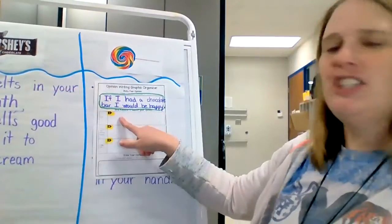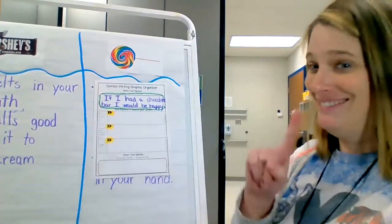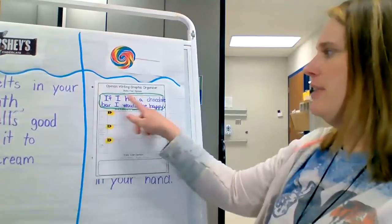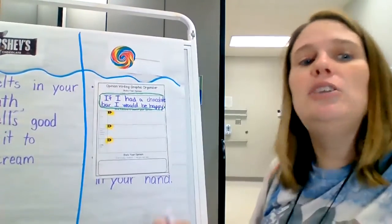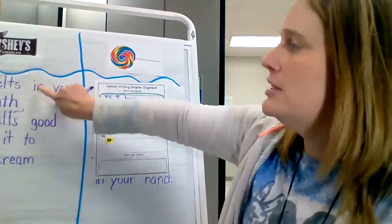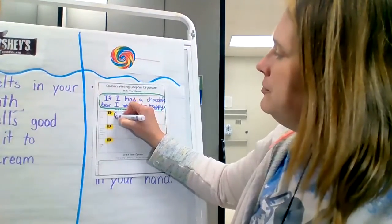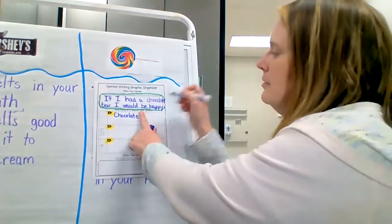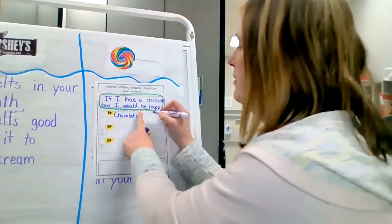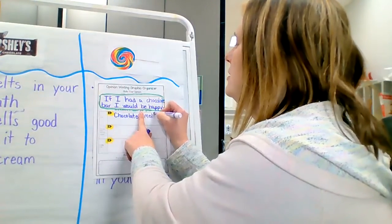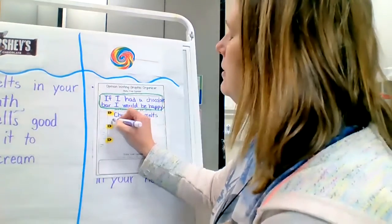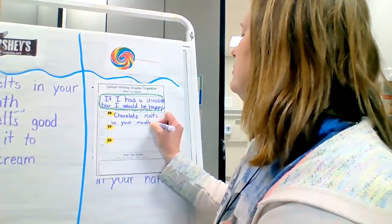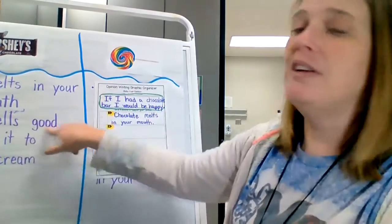I put 'melts in your mouth.' Can I just write 'melts in your mouth' over here? No, I need to put it in a real sentence. I could put, let's see, 'If I had a chocolate bar I would be happy, chocolate melts in your mouth.' And you know what, the only word I need to add is 'chocolate' because I have all the rest of those words over there. Chocolate. I am going to try to use a space this time. If I forget it's okay because this is my rough draft, but I am going to try. Melts in your mouth.